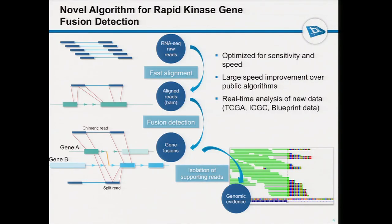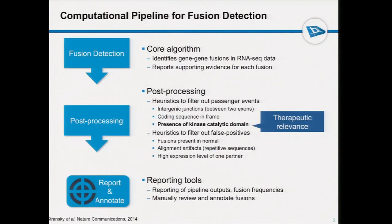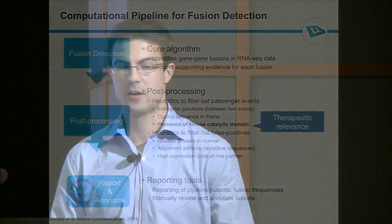In the final step of the pipeline, there is some false positive detection that reduces the number of false positive and passenger events that can be seen in the data. These post-processing tests are very important in order to discover what could be real driver events in those tumors, as opposed to passenger or false positive events.